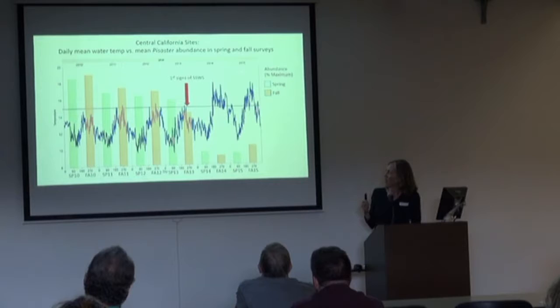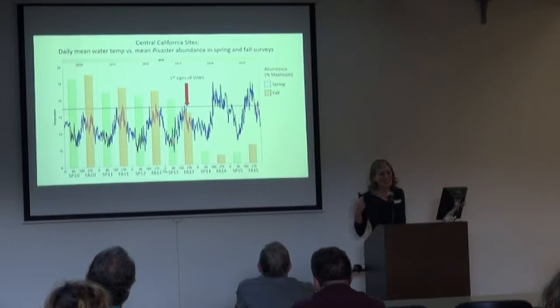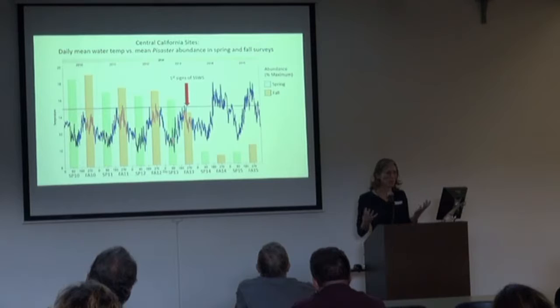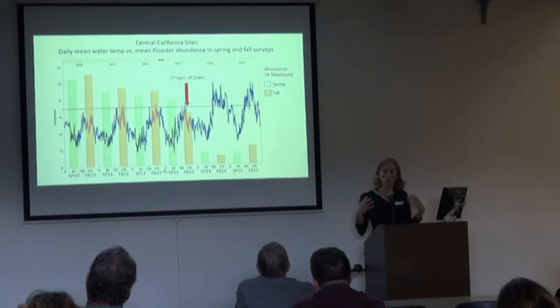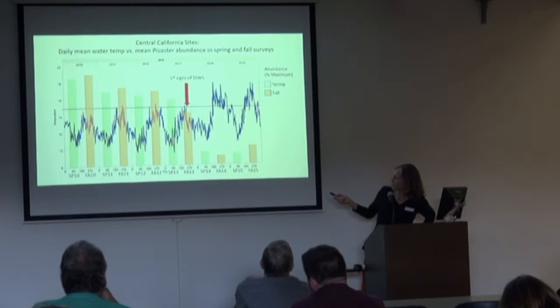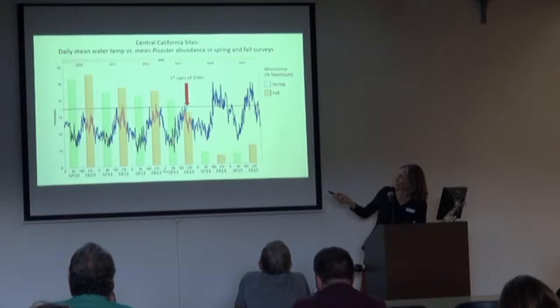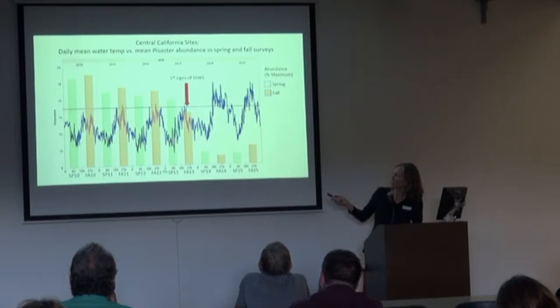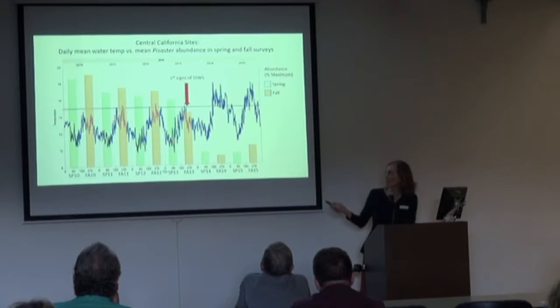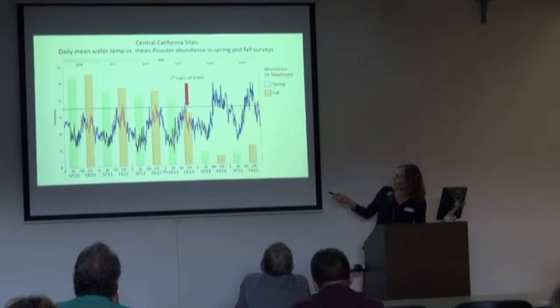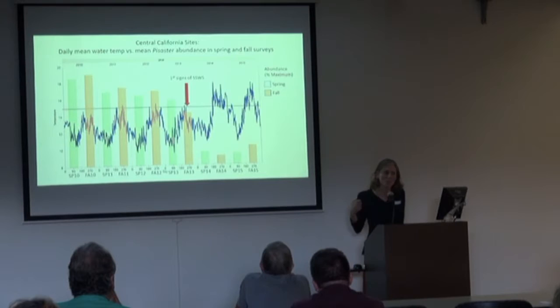The take-home message is that temperature likely does play a role in some areas, but it's much less clear what that role is in this event. This disease event seems to be more complicated than prior events. The other thing to notice is this gradual decline at these sites. We're wondering if it's possible that this disease has been around for a number of years, affecting populations at very low levels that we might have missed, and then it was only later that we got these big declines more correlated with when water temperatures warmed. So there's still lots of work to do to get to the bottom of the role of temperature.